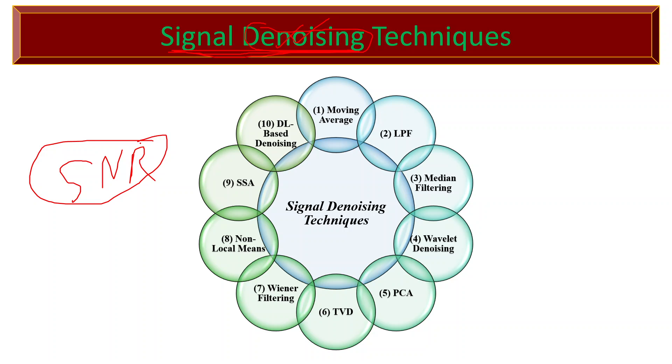Some commonly used signal denoising techniques include: First, the moving average method, which calculates the average of neighboring data points within a sliding window to smooth out noise by averaging out variations. However, it may also blur sharp features of the signal.